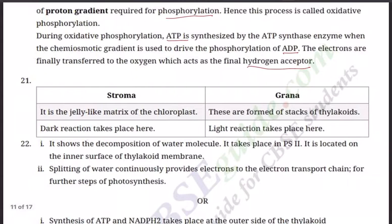Question number 21: Differentiate between stroma and grana of chloroplasts. You can draw the diagram here so that the examiner is impressed. Stroma is the jelly-like matrix of chloroplasts. Grana are formed of stacks of thylakoids. In stroma, the dark reaction takes place. In grana, the Hill reaction — the light reaction — takes place.